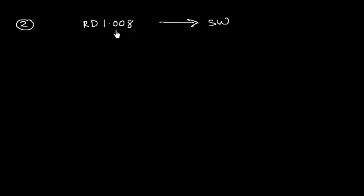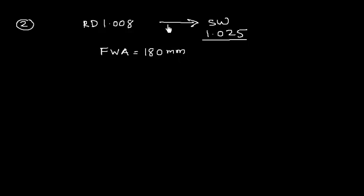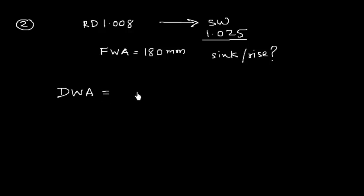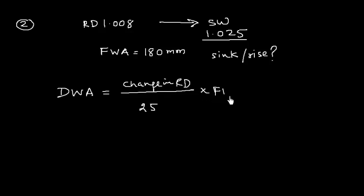Problem number two: a ship goes from water of RD 1.008 to salt water of RD 1.025. We need to find the change in draft and state whether the vessel will sink or rise. The dock water allowance (DWA) is given by: DWA = (change in RD expressed per 1000) ÷ 25, multiplied by the fresh water allowance.